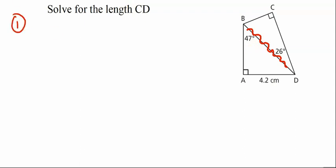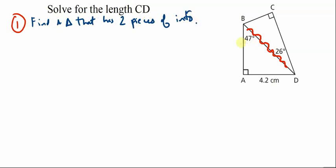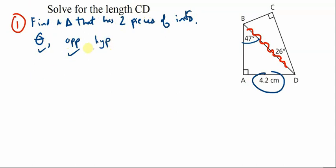Find a triangle that has two pieces of information. We have an angle, and according to that we also have the opposite side, and the third piece is the hypotenuse. Relating opposite and hypotenuse, we would employ the sine function.